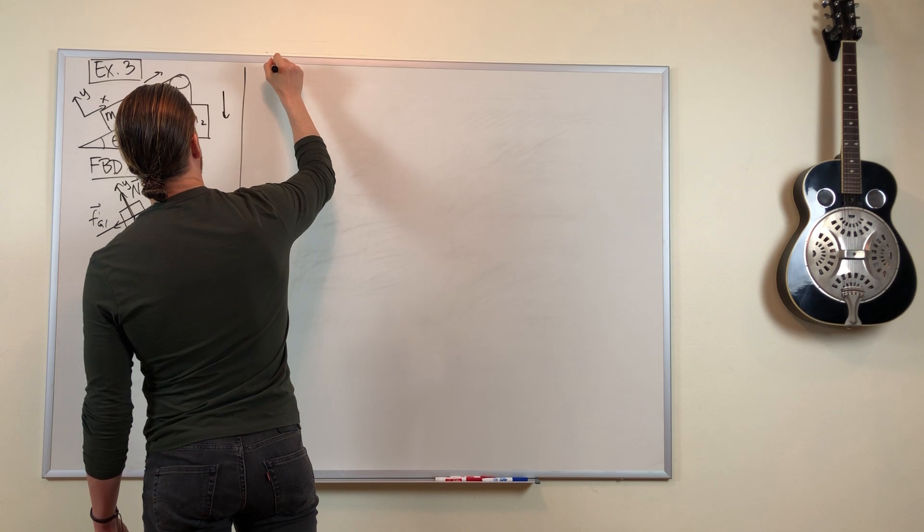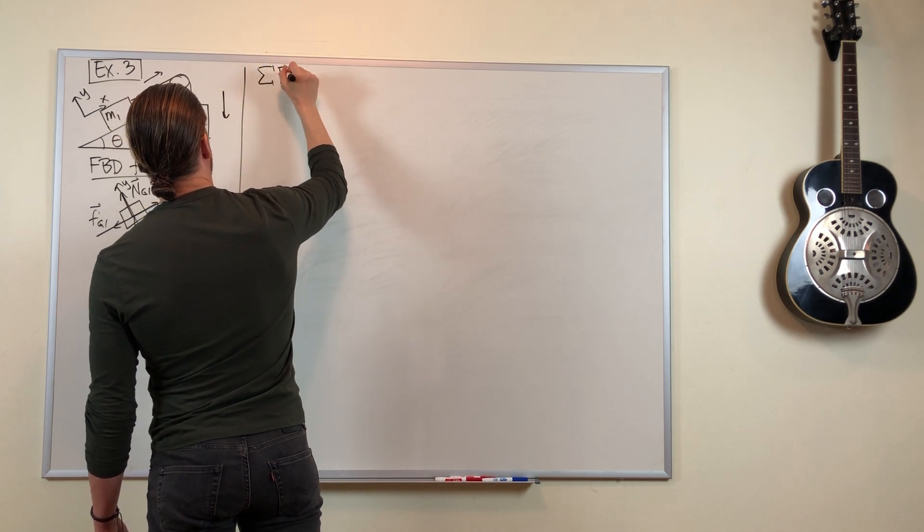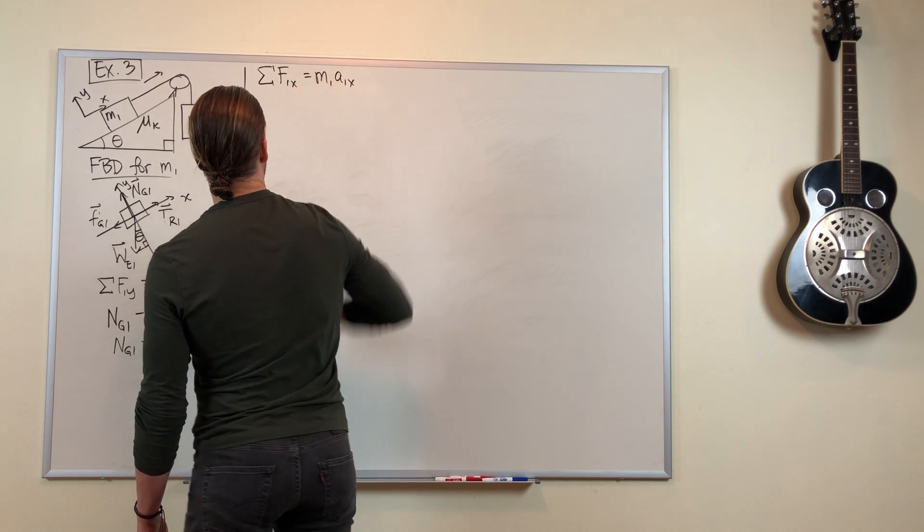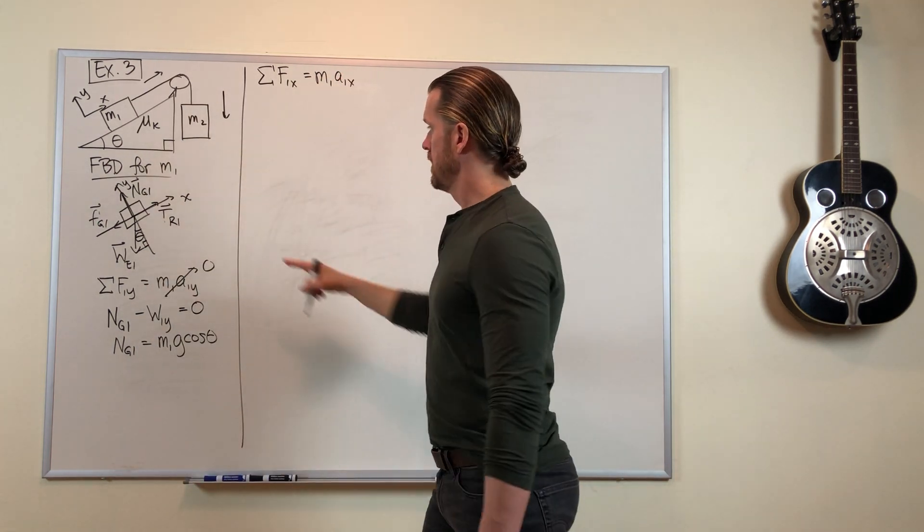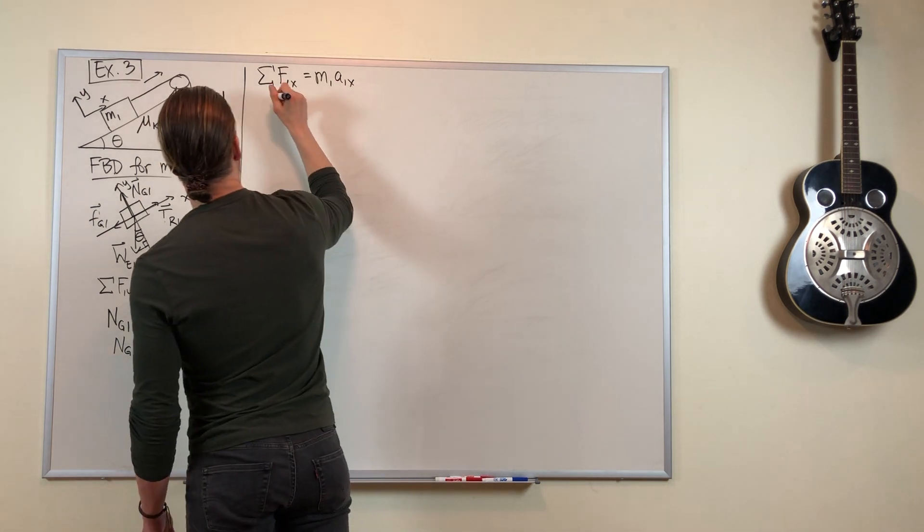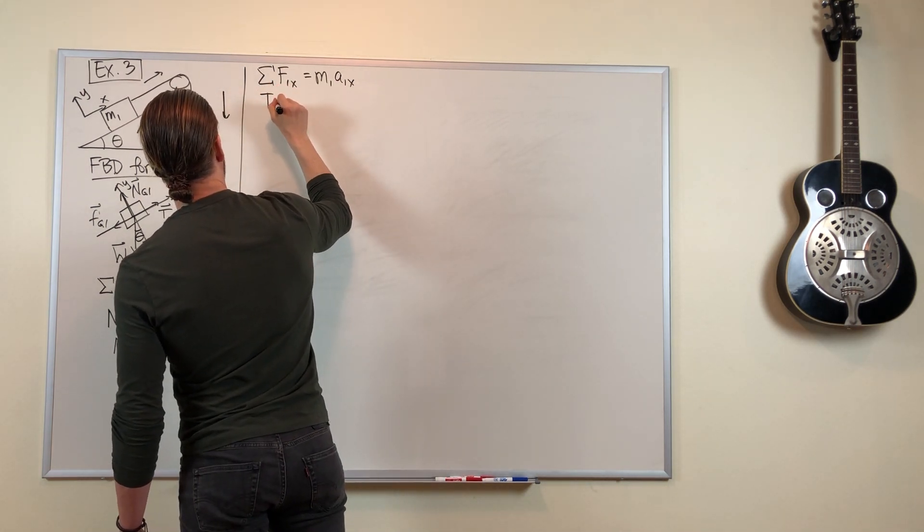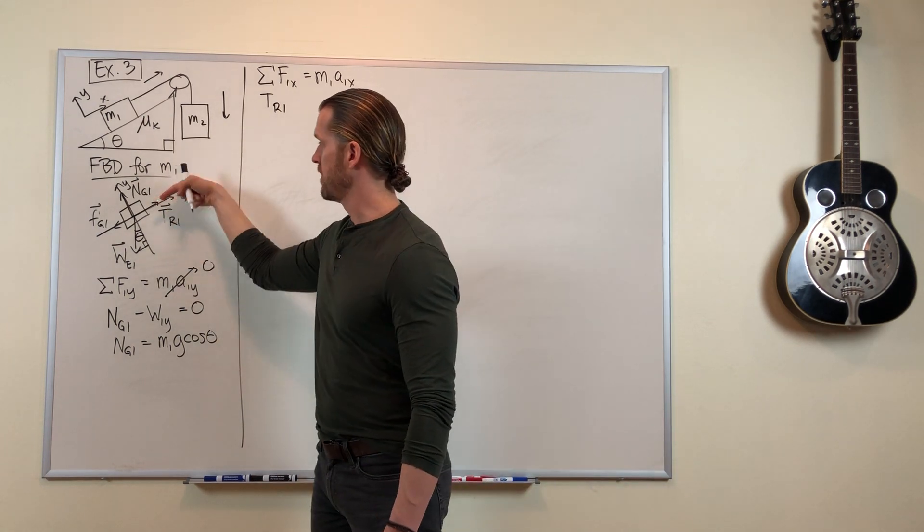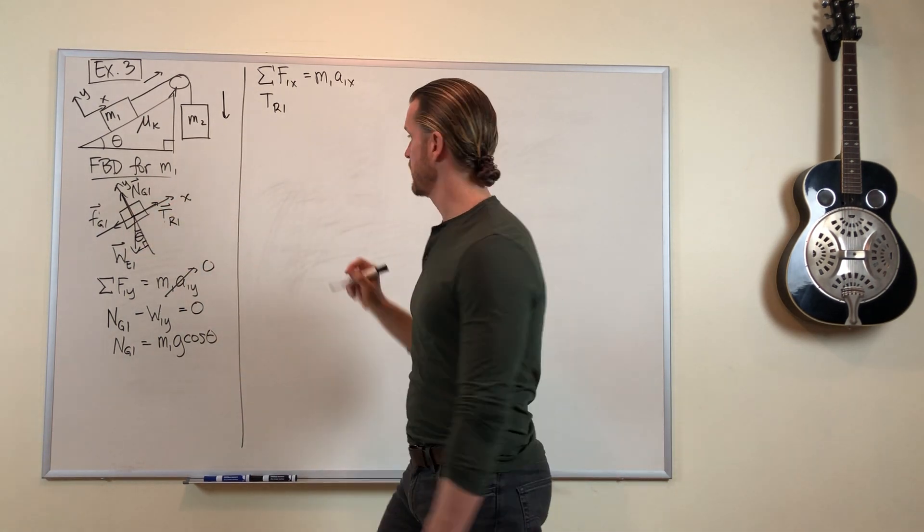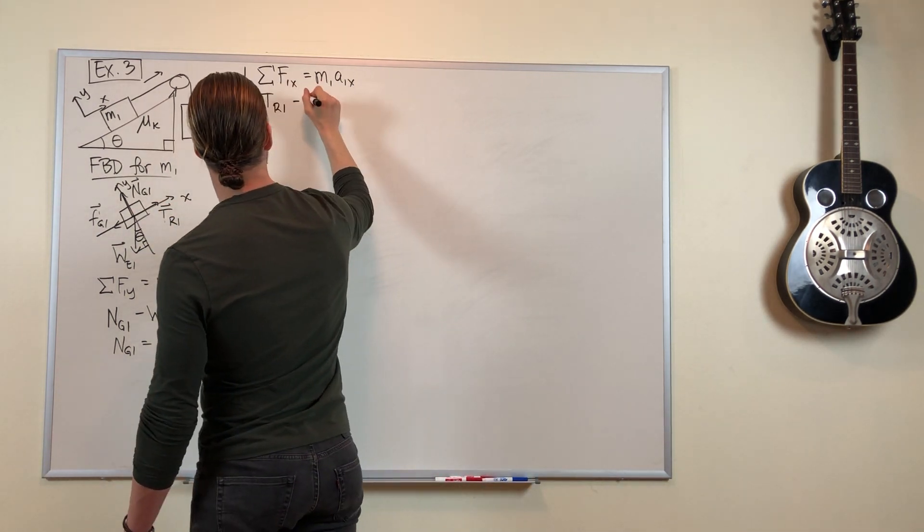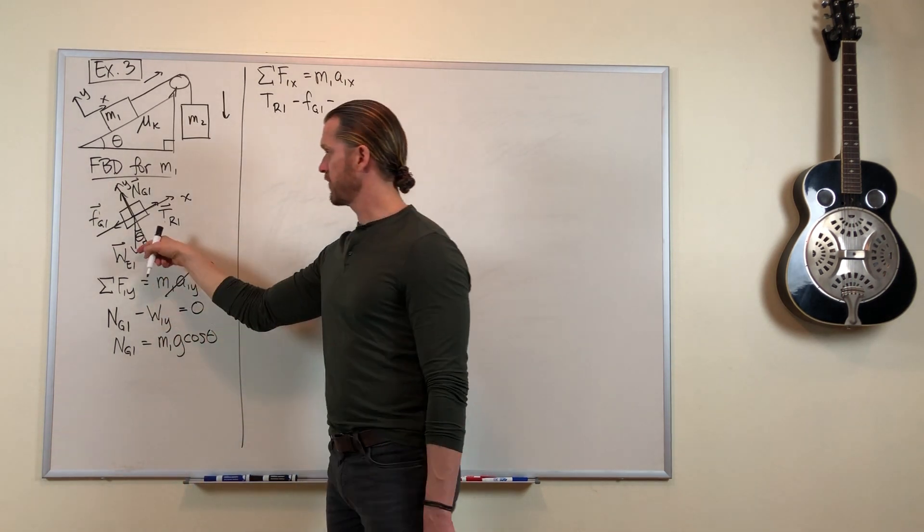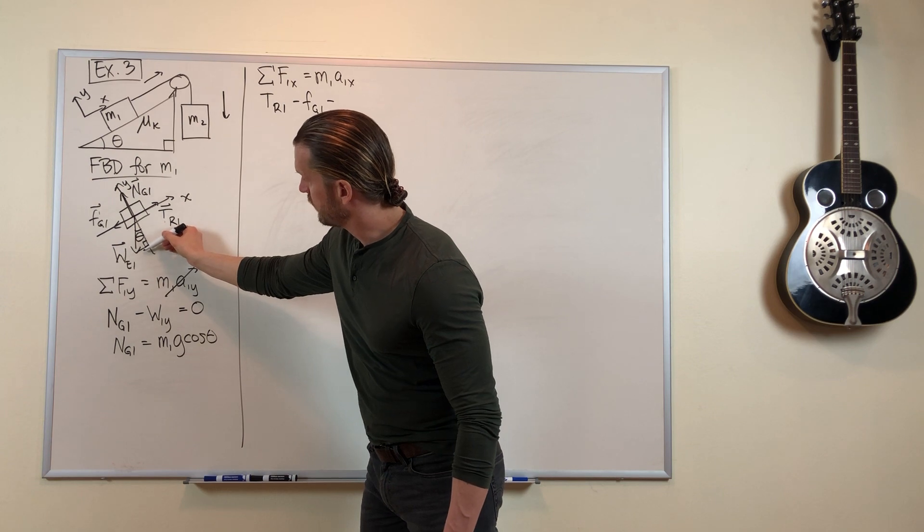So we need to know that so we can understand the friction force in a minute. Let's look at the x-direction for mass 1. In the x-direction, we've got tension force. That's positive. And we have two forces in the negative x-direction. There's friction and there's the x-component of gravity. It's this little bit right here.